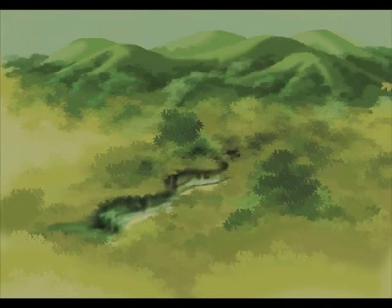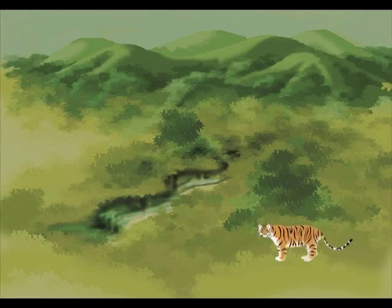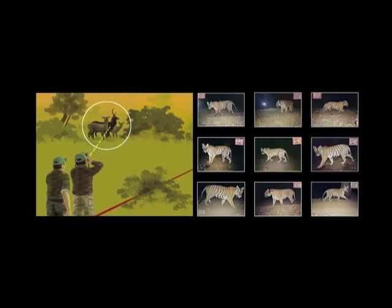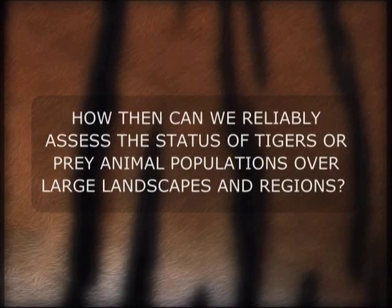Further, in some regions, tigers or prey animals may occur at very low densities. In such situations, acquiring adequate samples of visual detections or photographic captures might require far too much effort for which resources may not be available. How then can we reliably assess the status of tigers or prey animal populations over large landscapes and regions?